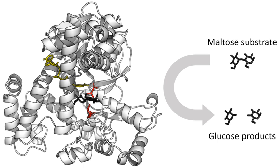Enzymes can be compartmentalized, with different metabolic pathways occurring in different cellular compartments. For example, fatty acids are synthesized by one set of enzymes in the cytosol, endoplasmic reticulum, and Golgi, and used by a different set of enzymes as a source of energy in the mitochondrion through beta-oxidation. In addition, trafficking of the enzyme to different compartments may change the degree of protonation — e.g., the neutral cytoplasm versus the acidic lysosome — or oxidative state, which in turn affects enzyme activity. Enzyme subcellular localization may also be altered through polymerization of enzymes into macromolecular cytoplasmic filaments.